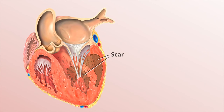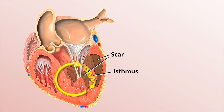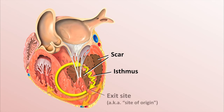Before moving away from scar-related VT, I want to address something that may have occurred to you. In contrast to focal VTs, which by definition originate from a specific small region of myocardium, re-entrant VTs can have macroscopic re-entry circuits that span a third or more of the ventricular chamber. What specific point of the circuit is referred to as the site of origin? The site of origin is defined as the point at which the depolarization wavefront exits the scar region and spreads to the rest of the myocardium. In practical terms, during an EP study a wire positioned at the site of origin of a re-entrant VT would result in PVCs or induce VT of an identical morphology to the intrinsic arrhythmia.